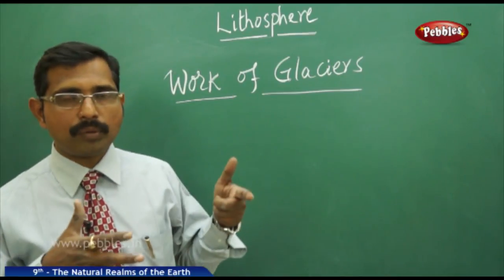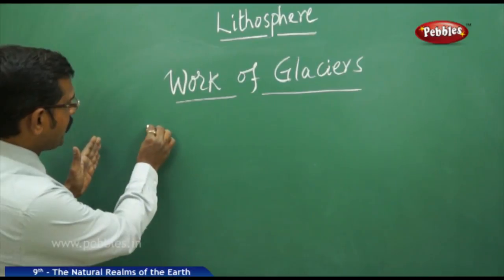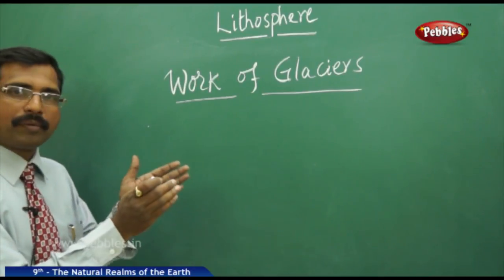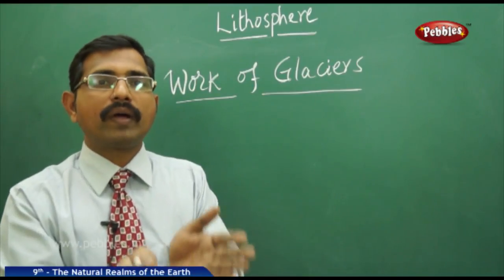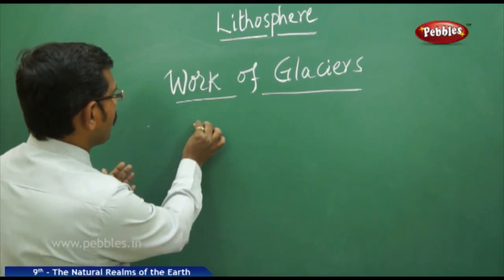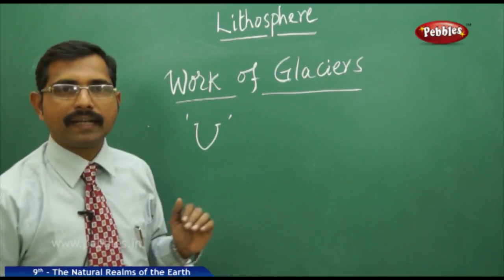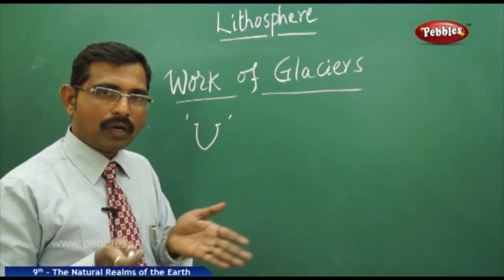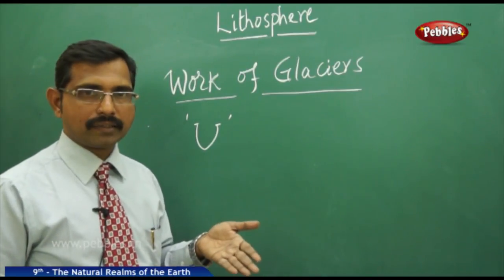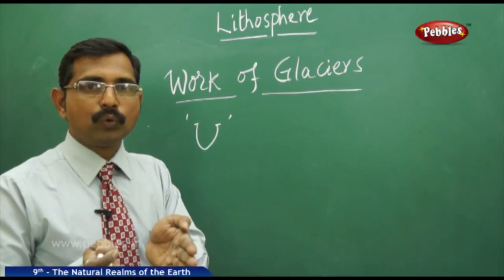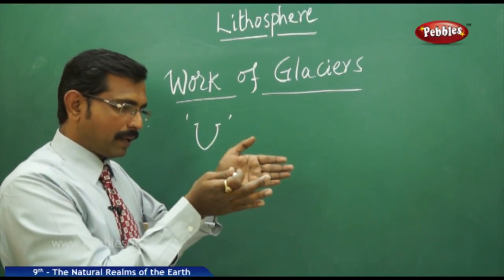Once the glacier meets a warmer area, it slowly melts. As mentioned before, rivers move in V-shaped valleys, whereas glaciers move in U-shaped valleys. This is the main difference between rivers and glaciers — rivers flow in V-shaped valleys whereas glaciers move in U-shaped valleys.